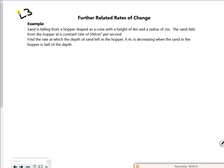Now these are massive, massive questions, so we're going to take a little bit of time to get through. So just bear with me. It says, sand is falling from a hopper shaped as a cone with a height of 4 metres and a radius of 2 metres.